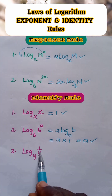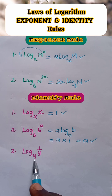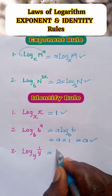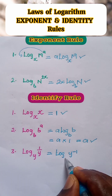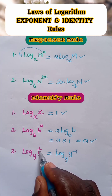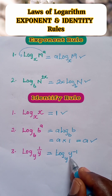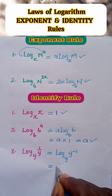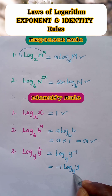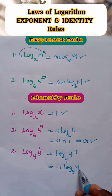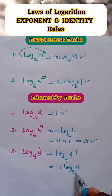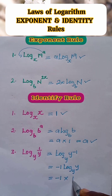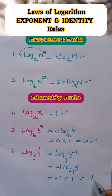Next, we have the logarithm of 1 over y, to base y. When you see 1 over y, the 1 in the numerator means the exponent is negative, so we rewrite it as log of y to the power of minus 1, to base y. Now, minus 1 is an exponent, so we apply the exponent rule: the exponent comes in front to multiply, giving minus 1 times log of y to base y. By the identity rule, log of y to base y equals 1, so this becomes minus 1 times 1, which equals minus 1. That is the answer.